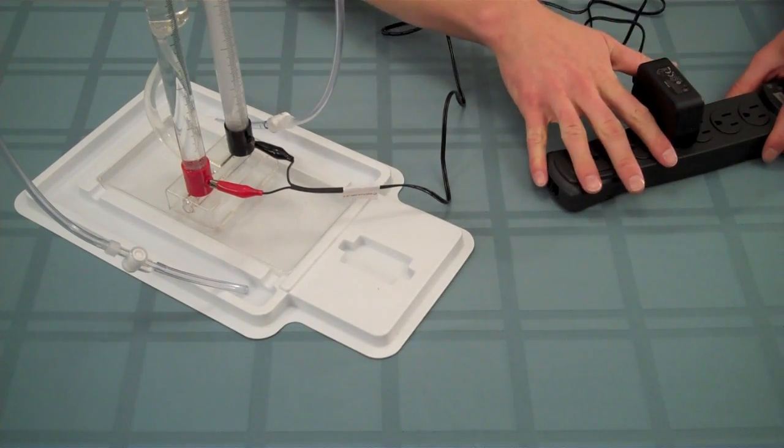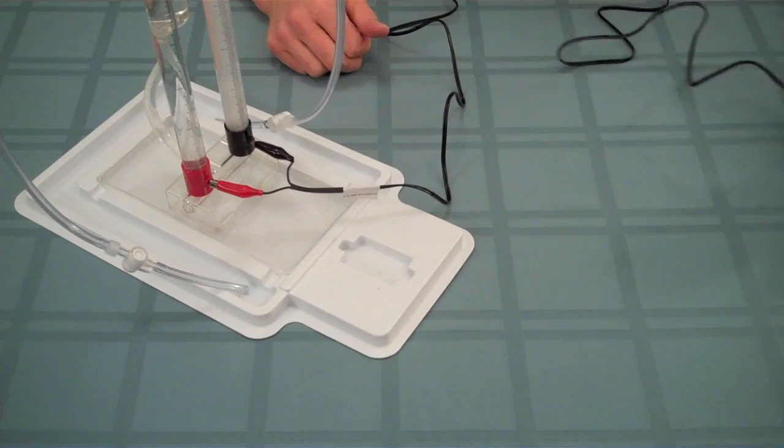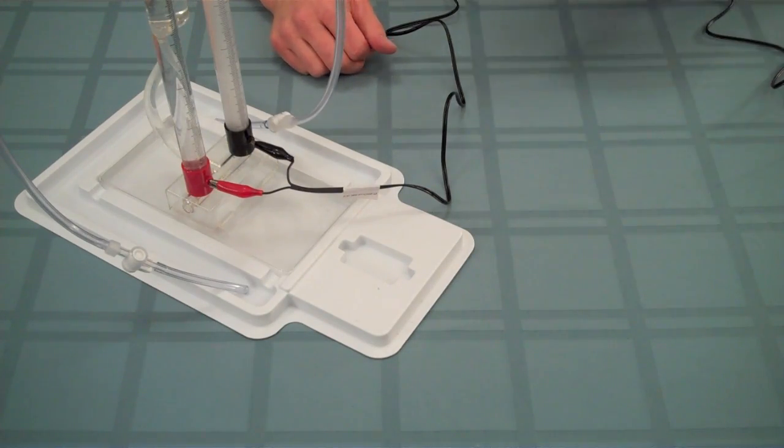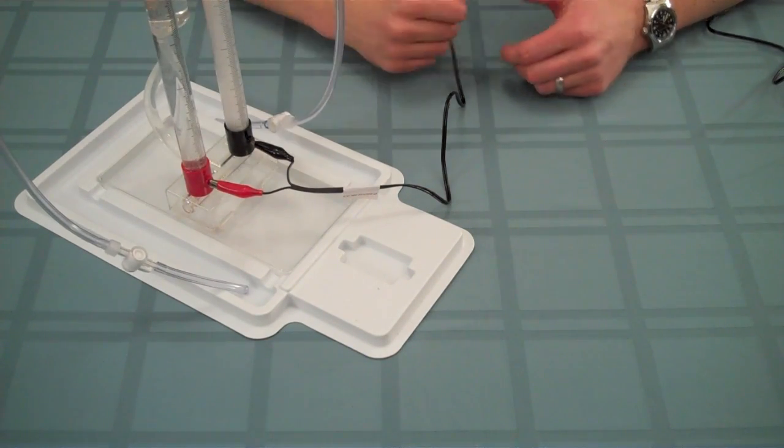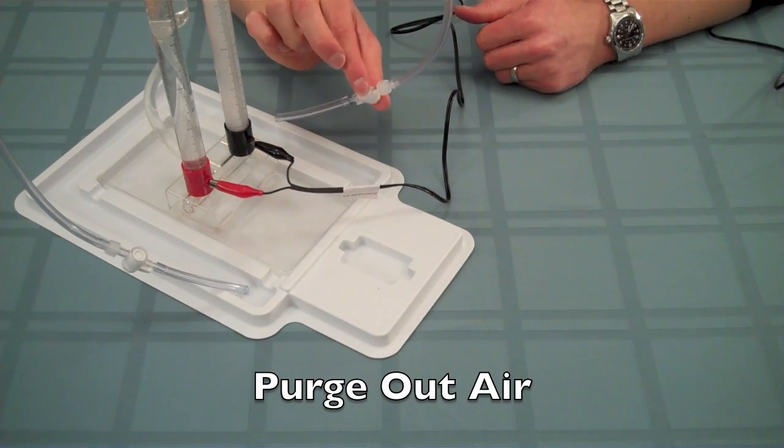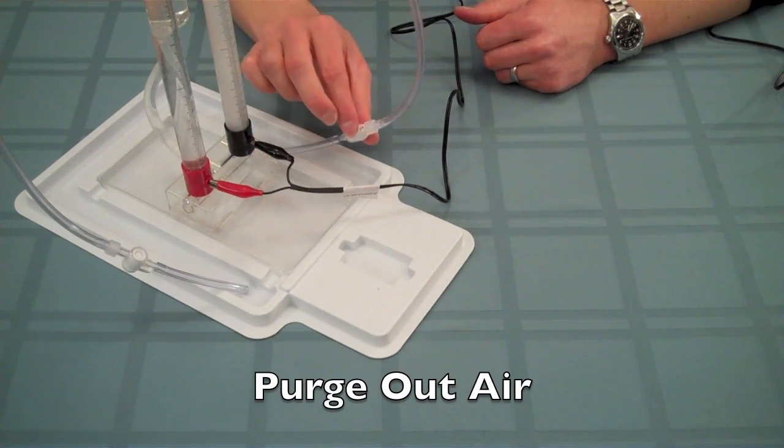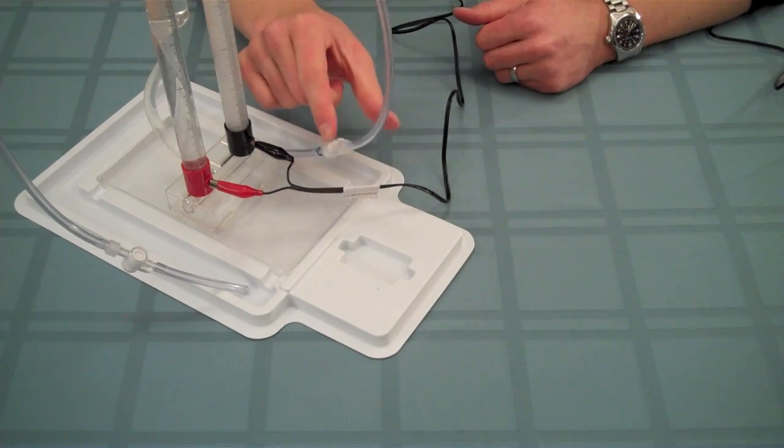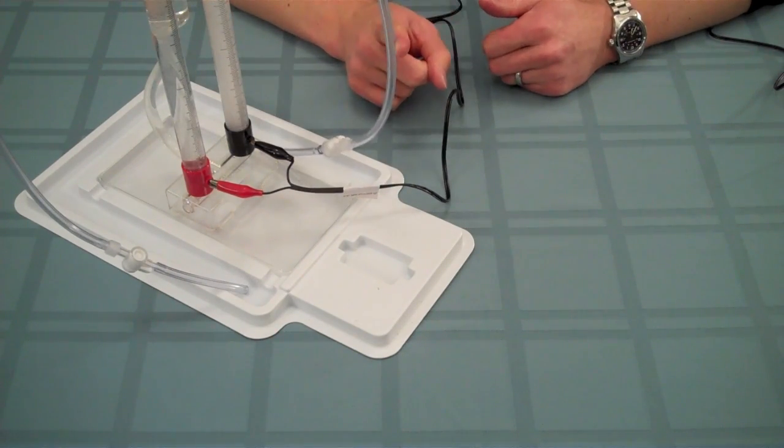Make sure that the power strip or any source of power is far enough away from the electrolyzer in case any of the potassium hydroxide were to spill out. Run the electrolyzer with both valves in the open position so that you purge out any excess air that's either in the storage columns or in the gas supply tubes. This will take about one minute.